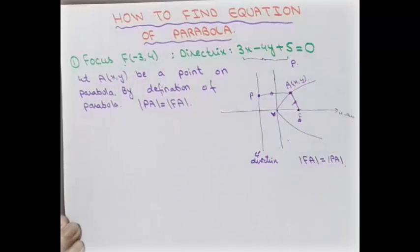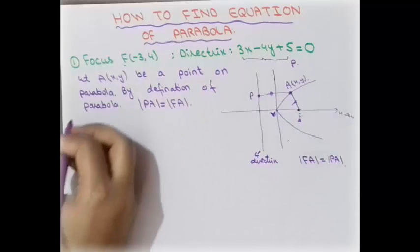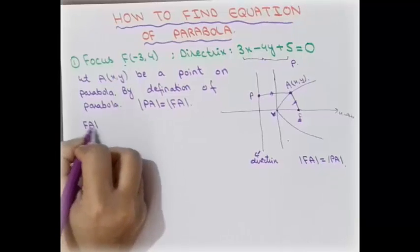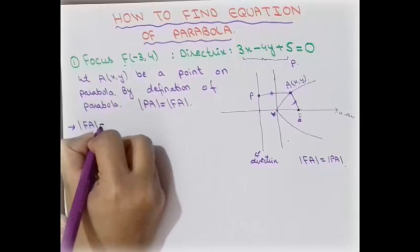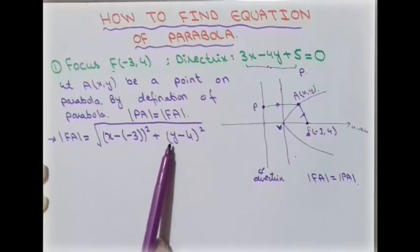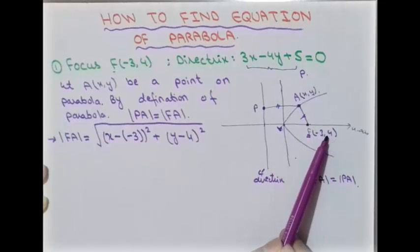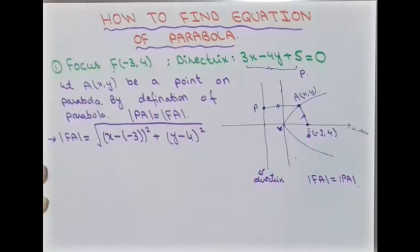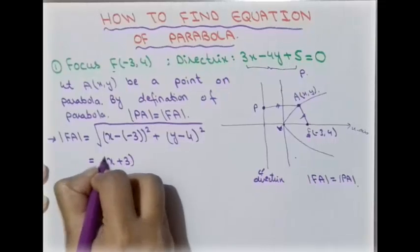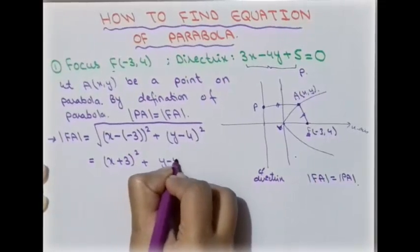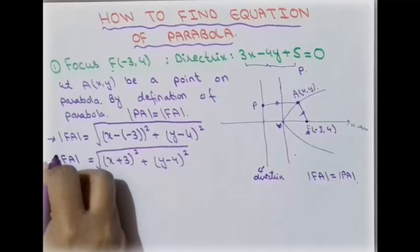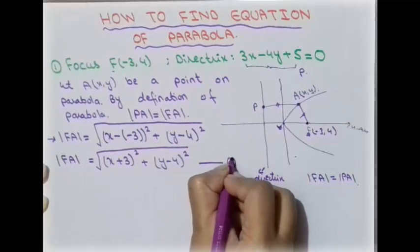Here is the focus point, which is known, and here is a point A having coordinates (x, y). We apply the distance formula between these two points. So in the first step, the distance FA equals the square root of (x minus (−3))² plus (y minus 4)², which simplifies to the square root of (x + 3)² + (y − 4)². This is my first equation.